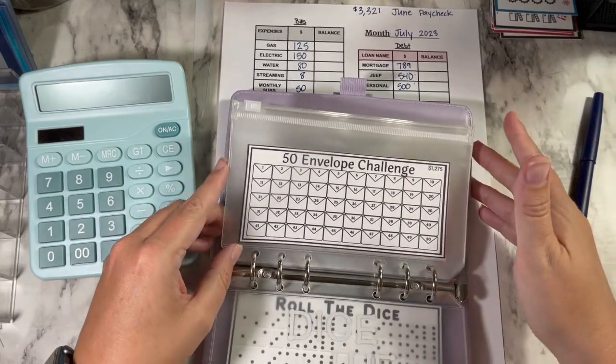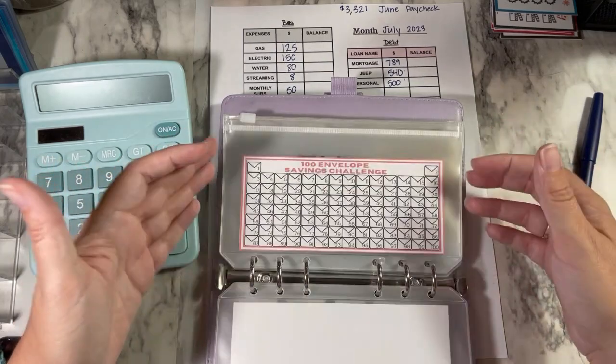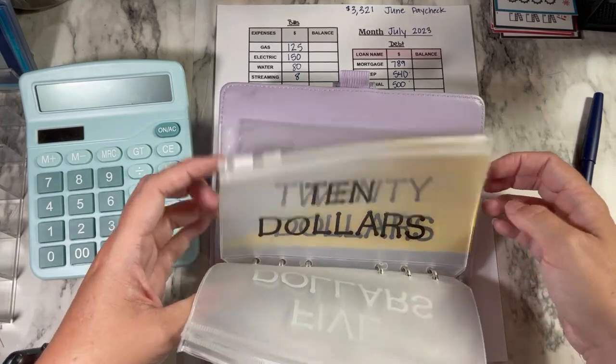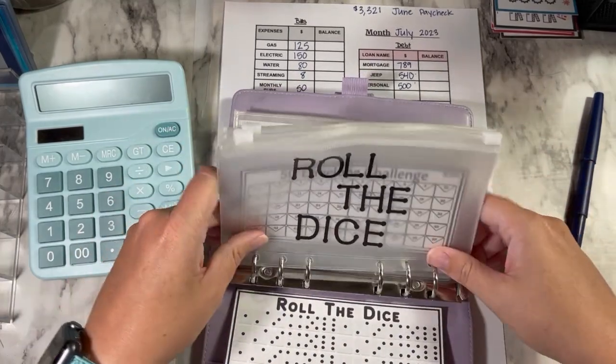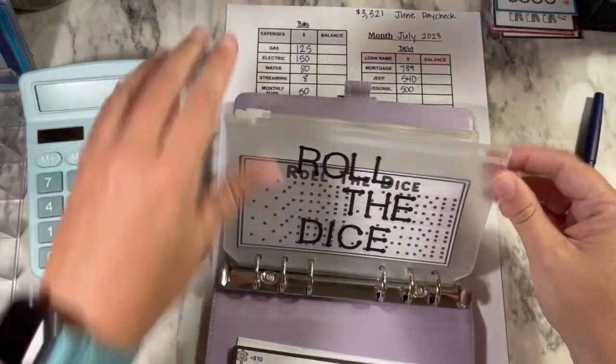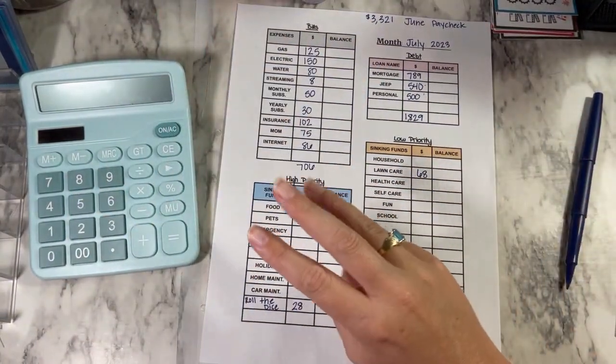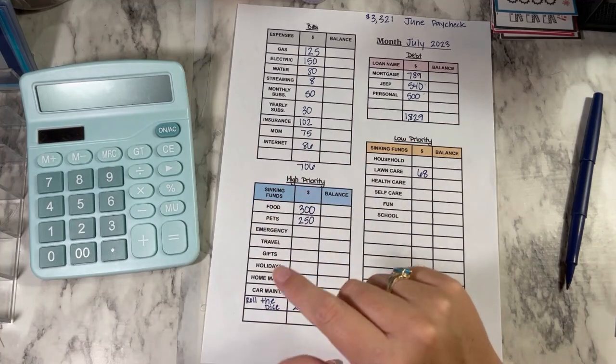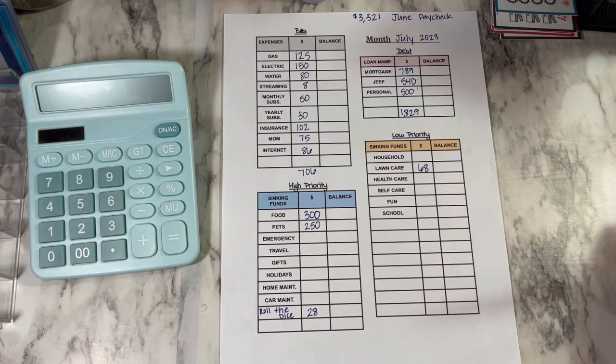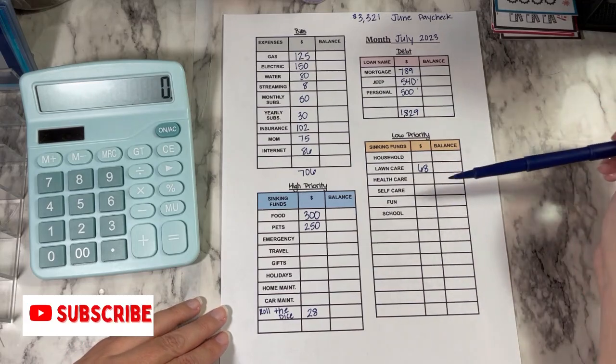I haven't been doing any savings challenges lately just because I've been focusing on other things, but I also have space for any extra ones or fives, tens, twenties, or whatever I decide to do. So I'm going to focus on roll the dice. So when I rolled before I decided to do my budget, I rolled three sixes, two threes, and a four, and that came out to $28. So I went ahead and wrote that down so that I know how much I'm going to have left over to put towards my high priority funds and my low priority funds.